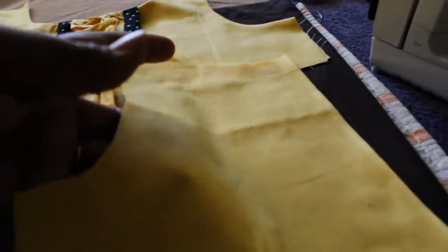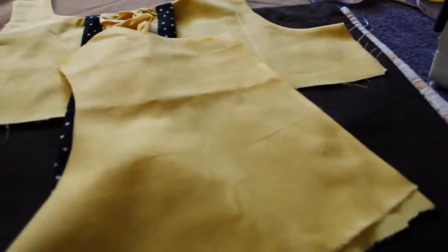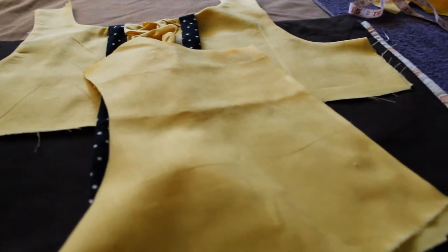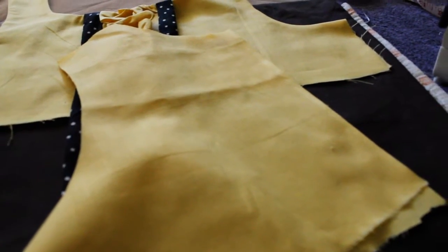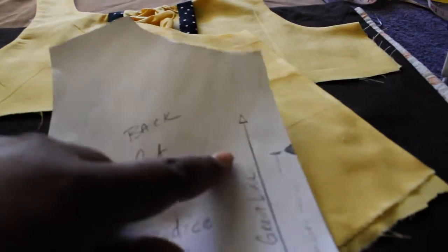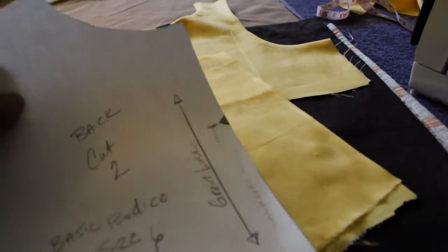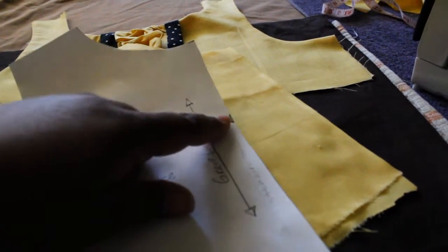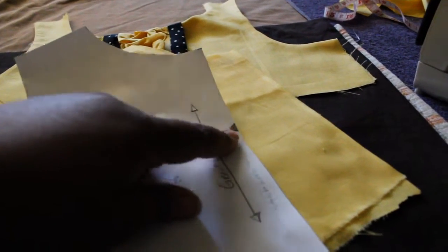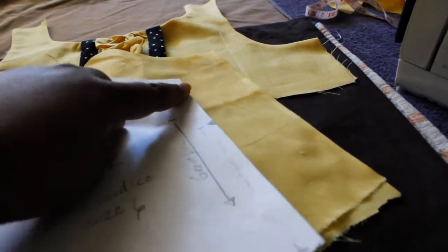Now I'm going to do the back. If you notice on the pattern of the bodice back there is this little angle right here, this little dot. The reason for that is we're going to sew from this triangle all the way down, leaving this part open.